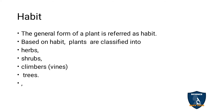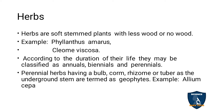Habit is the general form of the plant — whether the plant is a shrub, herb or tree. The general form of the plant is called habit. Based on the habit, it is divided into four categories: herbs, shrubs, climbers and trees. First, we will see the herb.